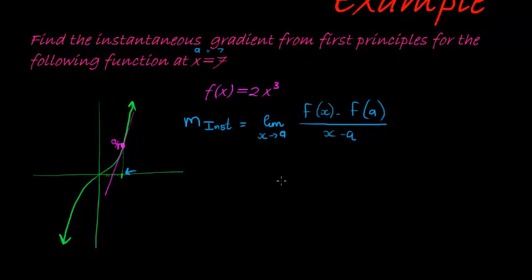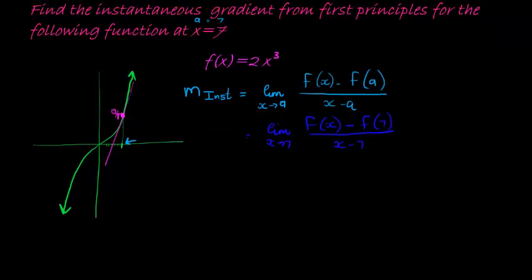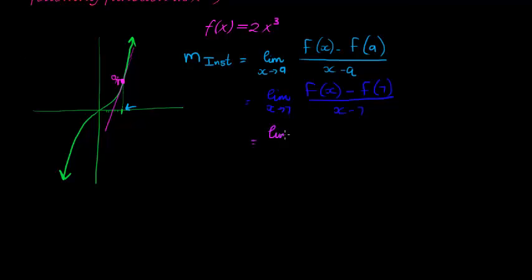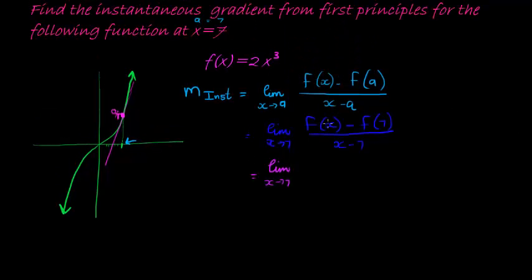So we have, substituting, the limit when x tends to 7 of f(x) minus f(7) divided by x minus 7. So that gives me the limit when x tends to 7, and now I substitute the functions. So here I've got f(x) is given, that's 2x to the power of 3 minus f of 7, that's 2 times 7 to the power of 3. I don't know what's 7 to the power of 3, I'm going to have to use my calculator, but that's okay. x minus 7.